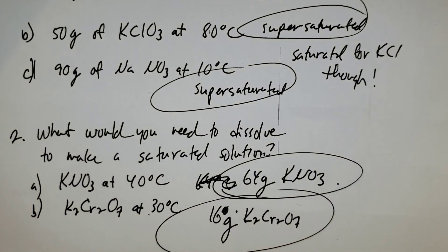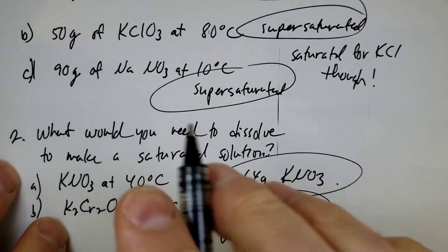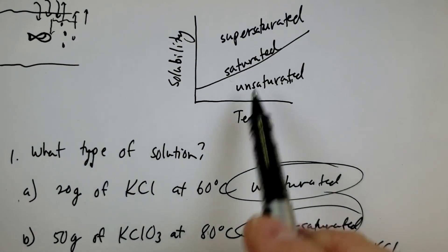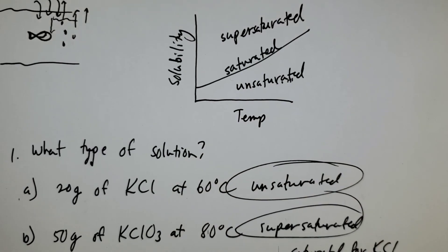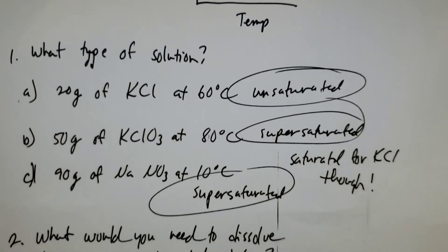That's how you handle the graphs there, ladies and gentlemen. So you should be able to do the assignment. Look back to here. And of course, this is the key here to reading that graph there. Where, if it's on the line, it's saturated, below unsaturated, above supersaturated. All right. See you again.